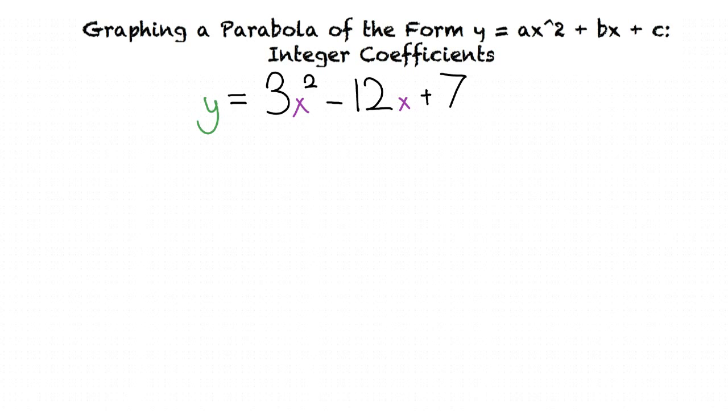For our first method, we are going to rewrite our problem 3x² minus 12x plus 7 into the form of y equals a times (x minus h)² plus k. A parabola in this form will have a vertex of (h, k).